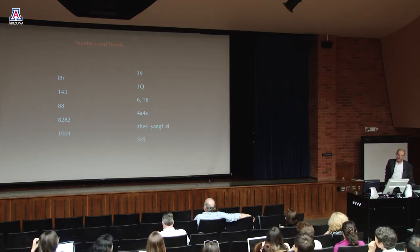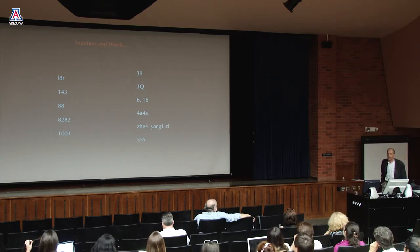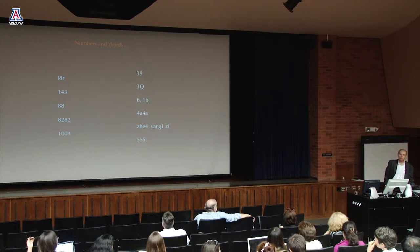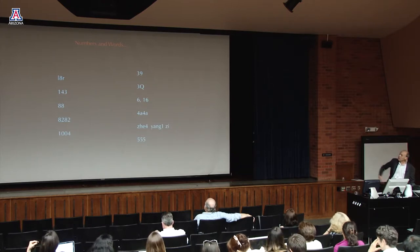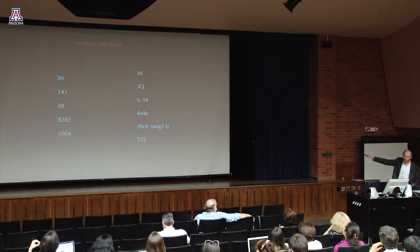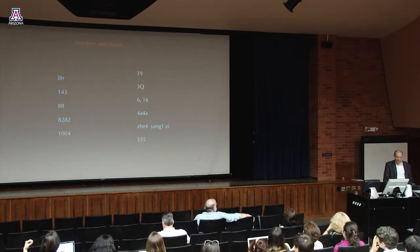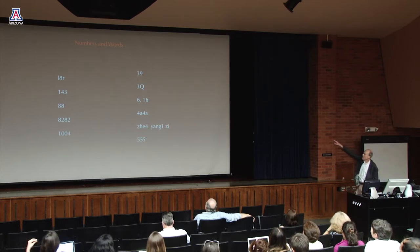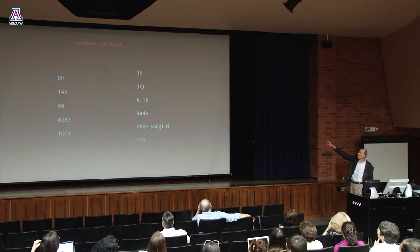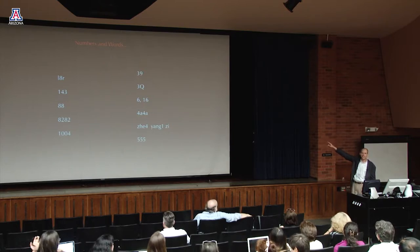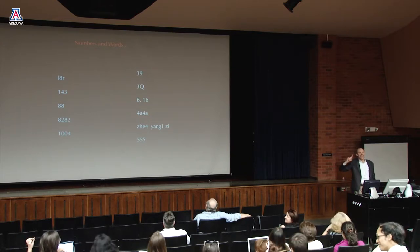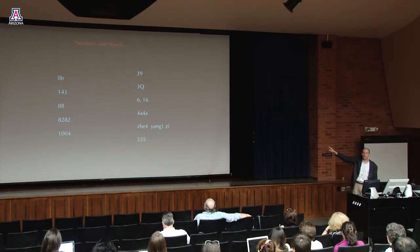In Korean, eight is pronounced 'pal' and two is 'e,' so 8282 becomes 'pali pali,' meaning 'hurry hurry.' The number 1004 in Korean pronunciation means 'angel.' Moving to Japanese and Chinese, 39 and 3Q both mean 'sankyuu' — a phonetic rendering of 'thank you' with a foreign accent, designated graphically. In Italian, 6 ('sei') is widely used for 'you,' and 16 ('sei chi') for 'if you.' In Chinese pinyin, numbers indicate tones — so numerals serve a completely different function.